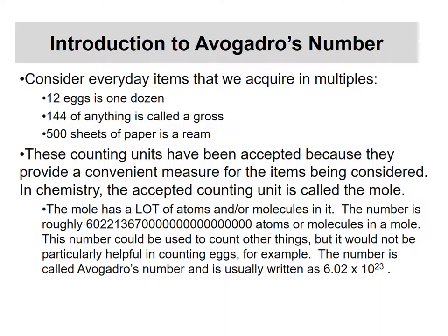Those are manageable, countable, workable sorts of things. When we start shifting over into talking about atoms, what we're going to find out is that atoms and molecules are so small that we cannot grab hold of them. We can't do much with them practically, so we have to think about how we can manage how many atoms we have when we simply cannot count them.